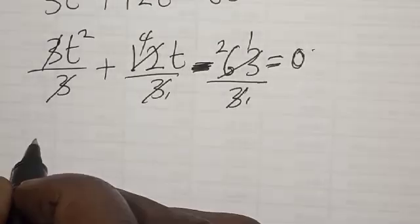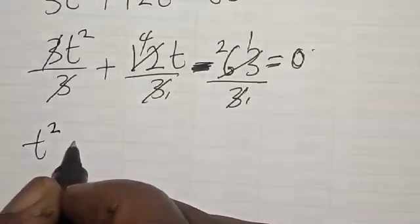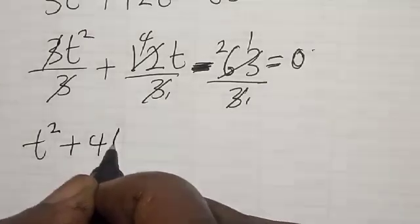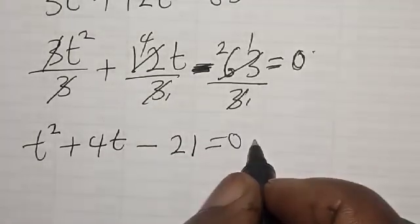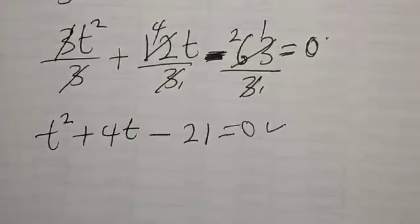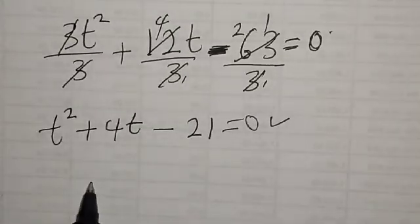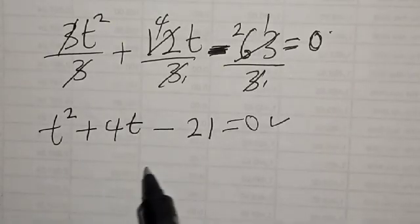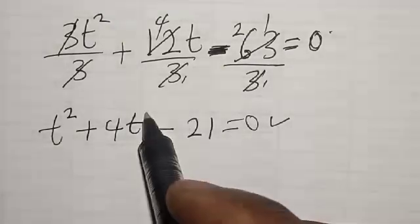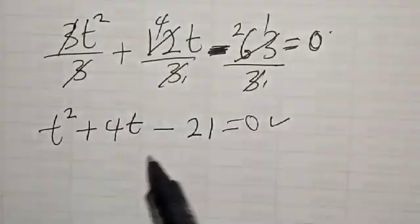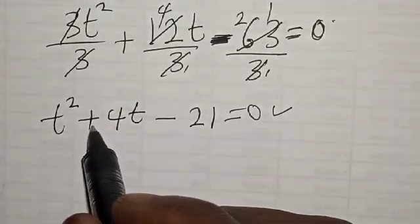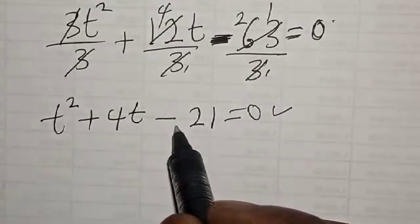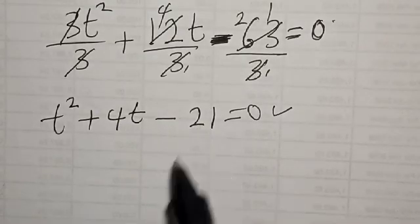We have t squared plus 4t minus 21 is equal to 0. This is a quadratic equation, which can be solved by using either the quadratic formula or factorization method. In this case, I am going to use the factorization method. The coefficient of t squared is 1, the coefficient of t is 4, and the constant is minus 21.